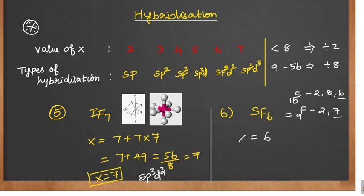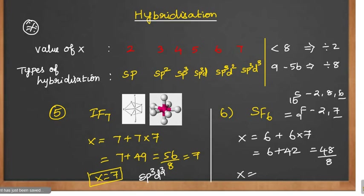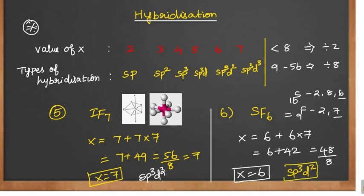So x value: 6 plus 6 into 7. 6×7 is 42. So 42 plus 6 = 48. Dividing by 8: 8×6 is 48. So x is equal to 6. x = 6 means sp3d2 hybridization.